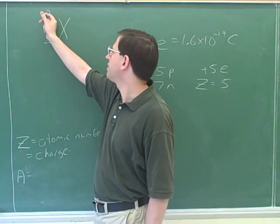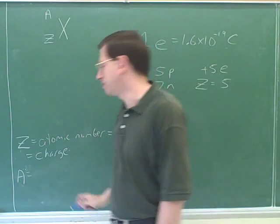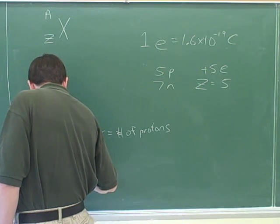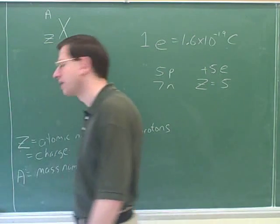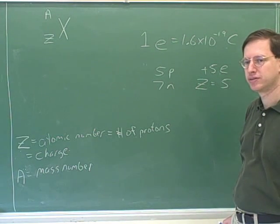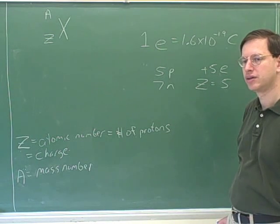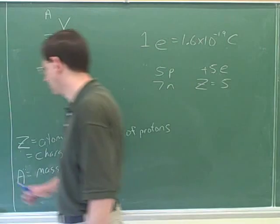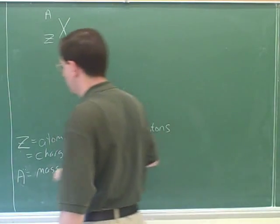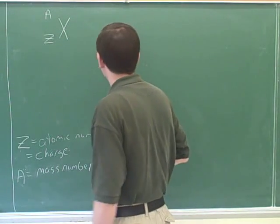And then this number up here on the upper left — that's what's called the mass number. The mass number is a measure of the mass of the particle or the nucleus.